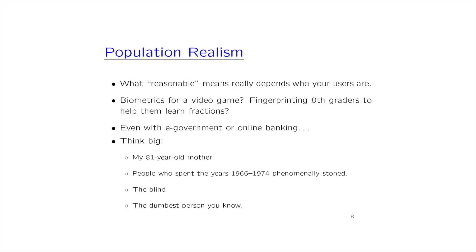We have to have population reasonableness. Biometrics for video games — probably a bad idea. Fingerprinting eighth graders to help them learn a foreign language — you're going to upset at least one parent. Online banking is another one. You have to think big when you think about your users. My mother is 81. People who need to vote include people with all sorts of impairments. We have a lot of veterans at UW-Stout — some are missing arms. If it has to be a thumbprint scan, that's a problem if the person lost their thumb in Afghanistan.